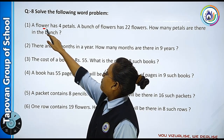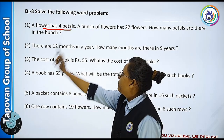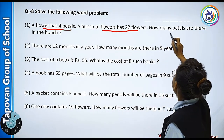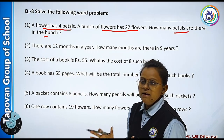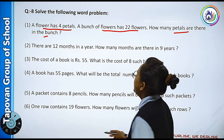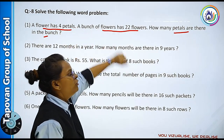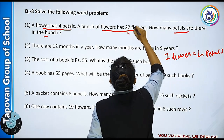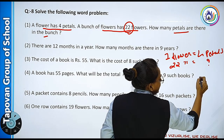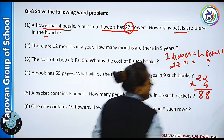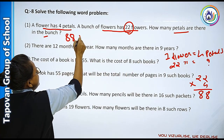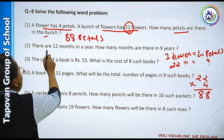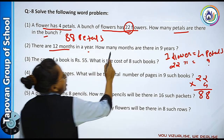The first question asks: what if a flower has four petals? The bunch of flowers has 22 flowers, so how many petals are there in the bunch? Simple formula — if one flower has 4 petals, then how many petals are there? Eight petals.